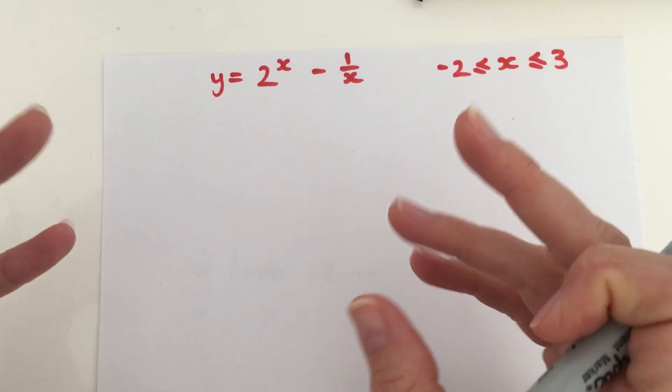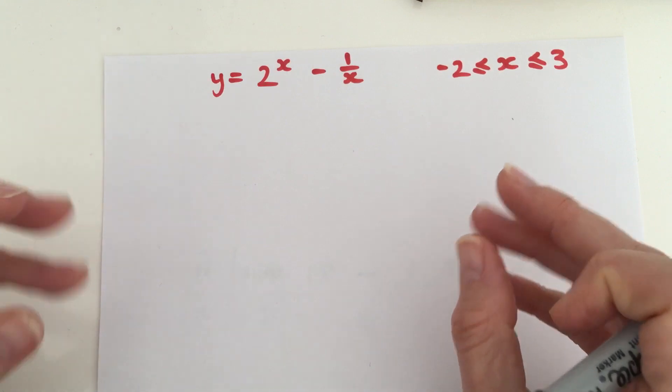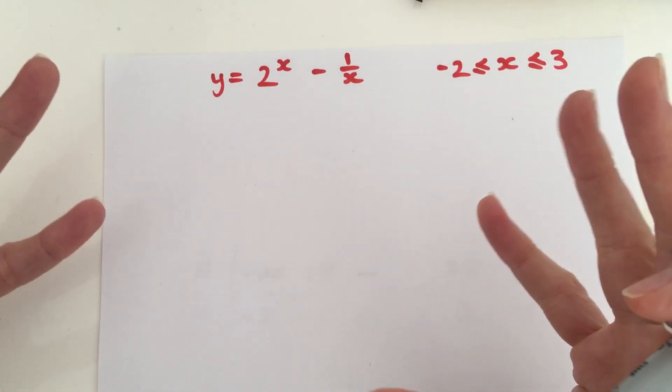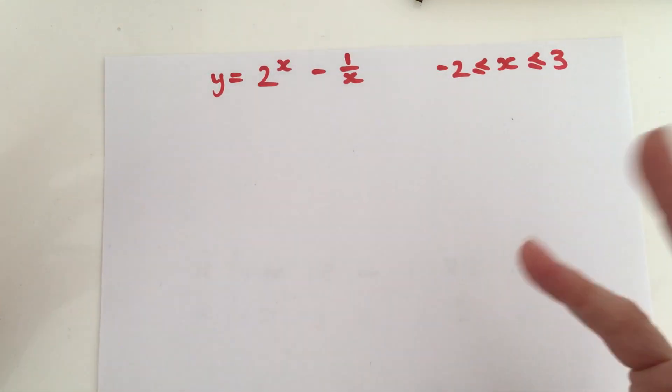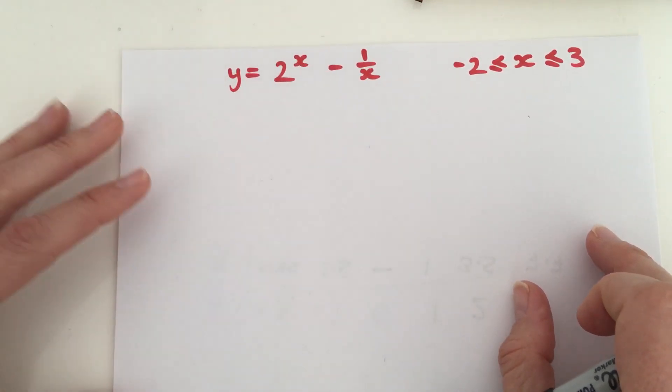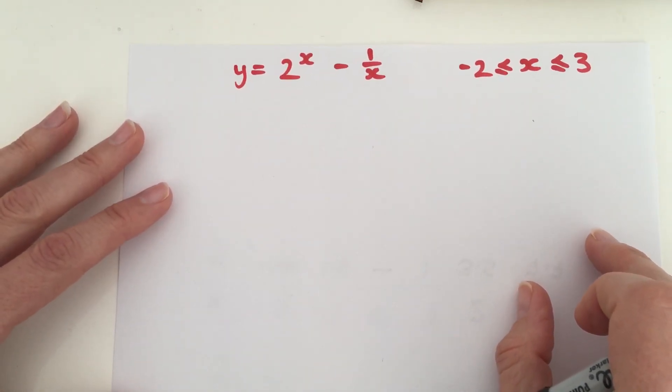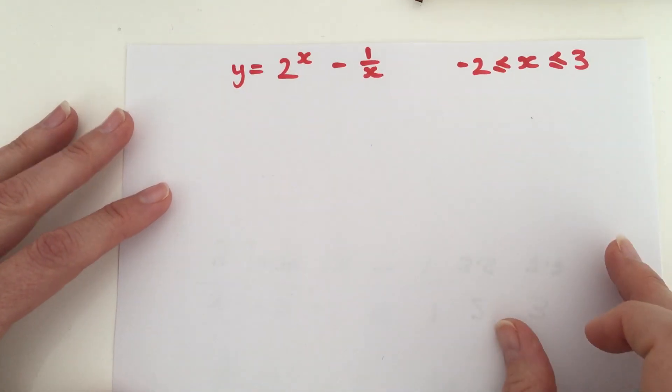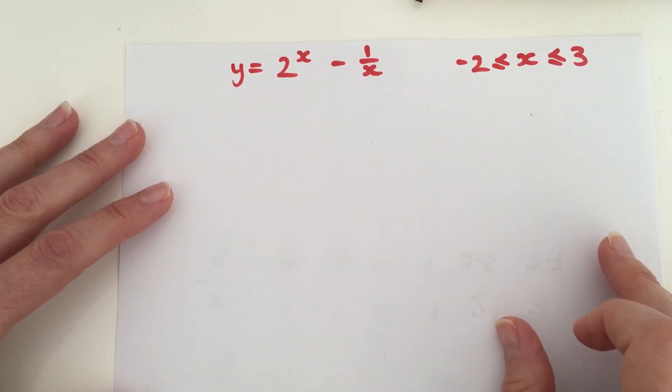So we've got two quite complex equations in one, and we want to be able to create a table of values and then plot the graph. This video is not going to show you how to plot the graph, but this video is going to show you how to create the table of values.